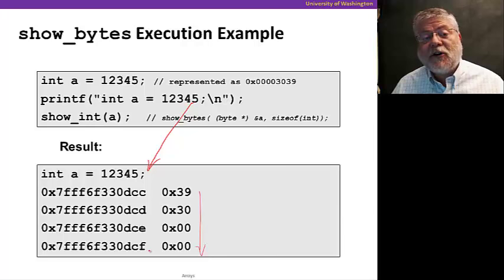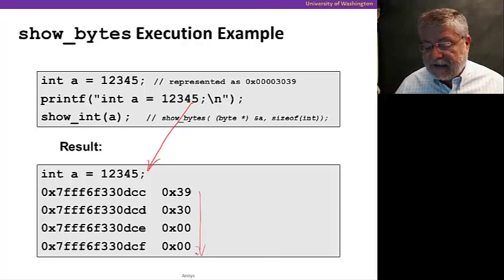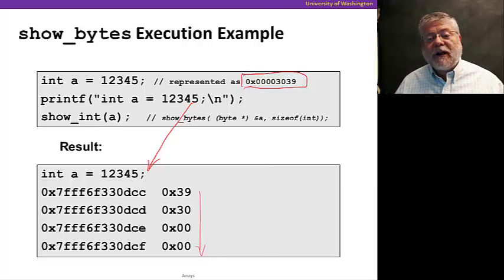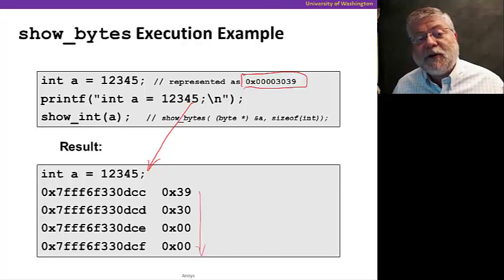And the values that got printed are 39, 30, zero and zero hex. Which we know from previous examples are the hex representation of that value. So this is indicating that our machine is little endian because we saw the least significant byte first. And that's how we could write a simple program to check the endianness of our machine.